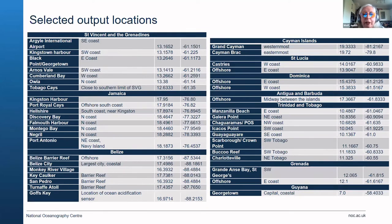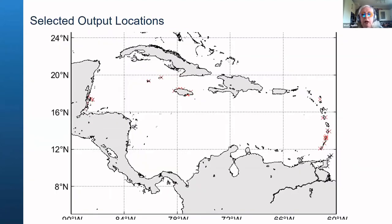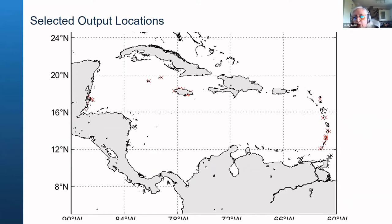If you would like to look through the list and notice a key point that's been missed, you will get the COAST tool to work with yourself and be able to add in a location. Just type in the chat if we've missed you. The distribution of output points shows quite a lot on the Leeward Islands arc in the Eastern Caribbean, a few around Jamaica and Cayman, a few around Trinidad and Tobago, one off Guyana, and a cluster in Belize.